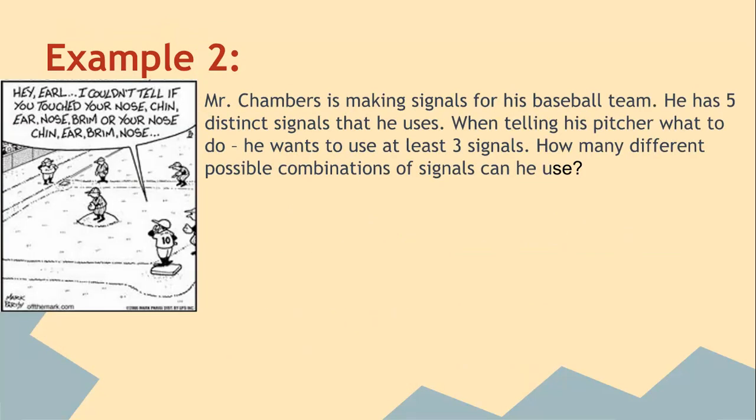Example two. Mr. Chambers is making signals for his baseball team. He has five distinct signals that he uses when telling his pitcher what to do. He wants to use at least three signals. How many different combinations of signals can he use?